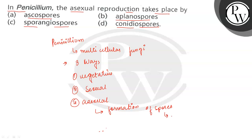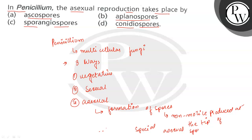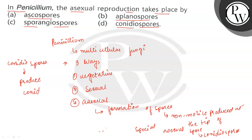These spores are non-motile and they are produced at the tip of a special structure known as the conidium. These conidium spores are further produced and then expelled out.